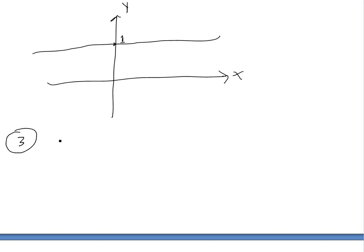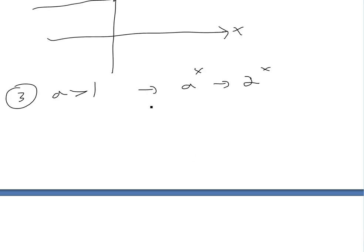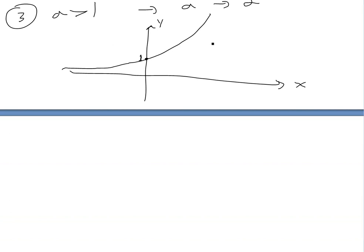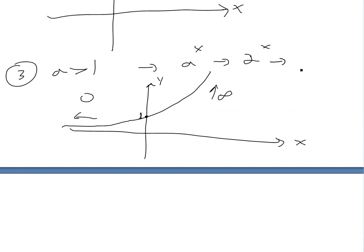Case three is when a is greater than 1. For example, 2 to the x. As x goes to positive infinity, 2 to the infinity is infinity, so the graph increases. At x equals 0, the value is 1. As x goes to negative infinity, 2 to the negative infinity equals 1 over 2 to the infinity, which goes to 0. So the graph approaches zero on the left and goes to infinity on the right.